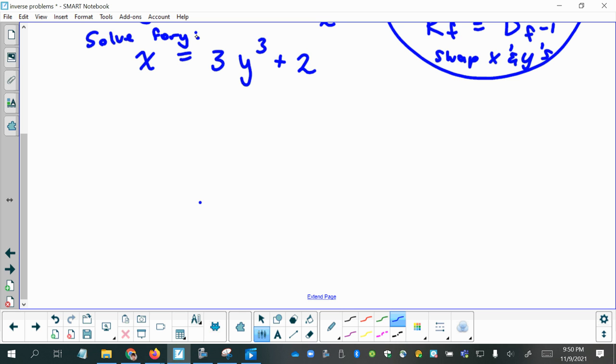So we're going to do inverse operations. We'll subtract 2 from both sides. So I'm just going to write this down here, x on the left. When I subtract 2 from both sides, I'll have x minus 2 on the left.